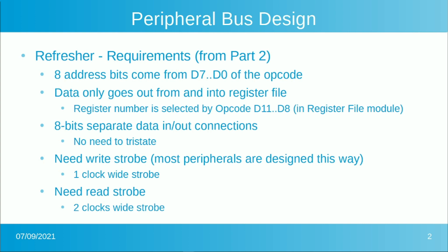We decided we're going to have one write strobe because most of the peripherals from Multicomp and other places are designed with a one-clock-wide write strobe at a 50 megahertz clock. So it's a skinny 20 nanosecond pulse, but that's more than enough since everything is inside the FPGA. We also need a read strobe, and that read strobe is going to be two clocks wide. Some things need a wider read strobe, and nothing is harmed by having a wider one — it gives more time for the data to come in from the device.